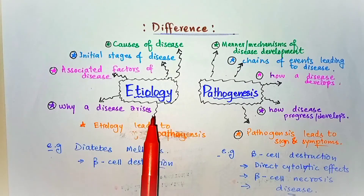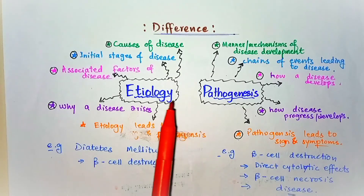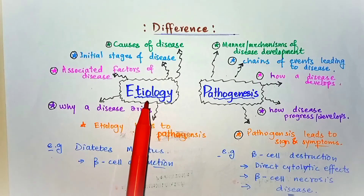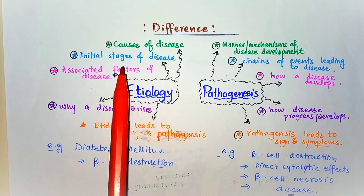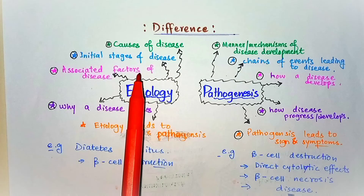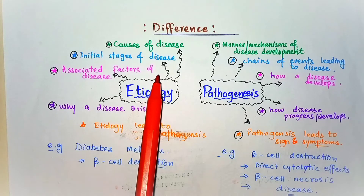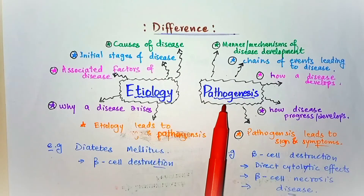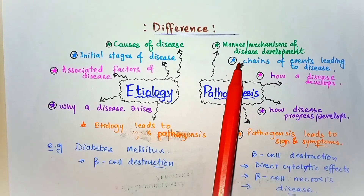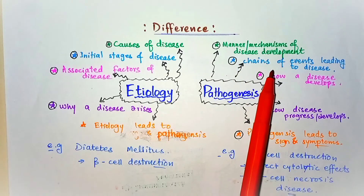Now moving toward the differences between etiology and pathogenesis. Number one: in etiology we discuss the causes of a disease, as etiology refers to the underlying causes of a disease. On the other hand, in pathogenesis we study the manner or the mechanisms of disease development.